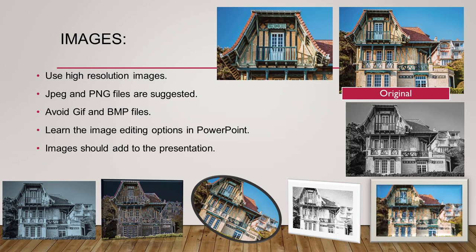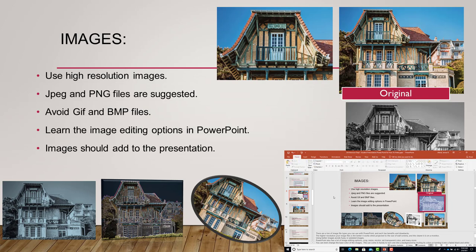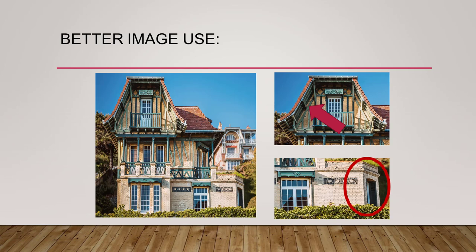There are a ton of image file types you can use with PowerPoint, and each has its benefits and drawbacks. The higher resolution your image file is, the better it works when projected onto large screens or displayed on a monitor. Using better images avoids fuzzy or pixelated results. PowerPoint also has a lot of image editing options — crop, resize, recolor, set transparent color, and many more. You can even change the base color of images, which can come in handy to turn one into a background by muting its colors or turning it into a faded black-and-white image. I really suggest you play with these features before your project. Don't add too many images to a single slide, as this can overwhelm your audience. It is better to use fewer photos and some key style and editing features to highlight portions of your image, and you can even use shapes to circle or point to features you are going to explain.